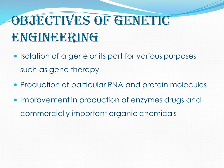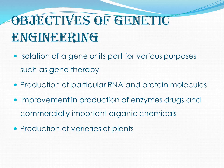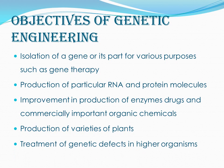Desirable characteristics can also be produced in plants, allowing us to obtain different varieties of plants of our own choice. Another objective is the treatment of genetic defects — we identify the defective gene and replace it with a normal gene, so genetic defects can be treated in higher organisms.